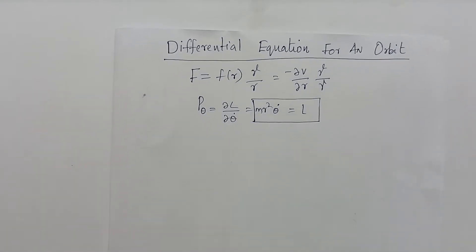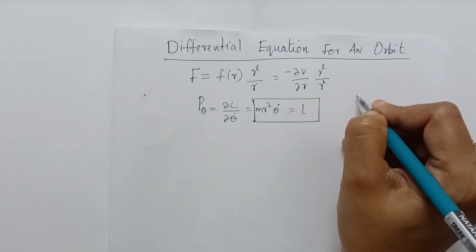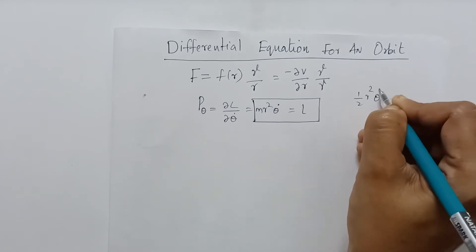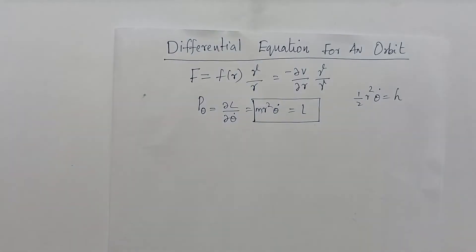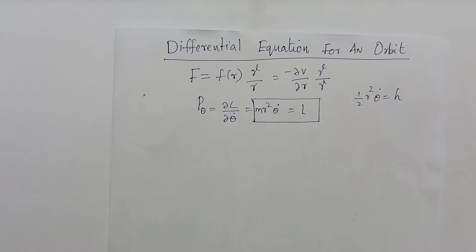Then we discussed areal velocity. Areal velocity is written as ½R²θ̇ = H, where H represents the areal velocity — that is, the area swept out by the radius vector per unit time. Then we took the Lagrangian in arc coordinates.